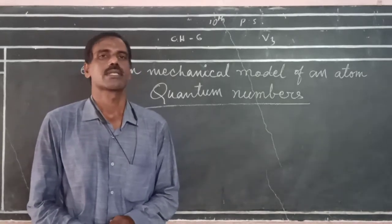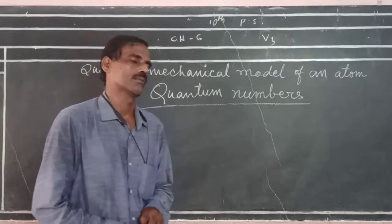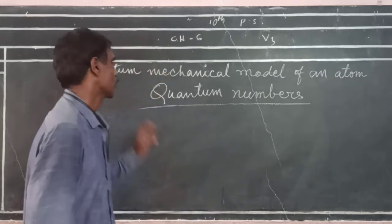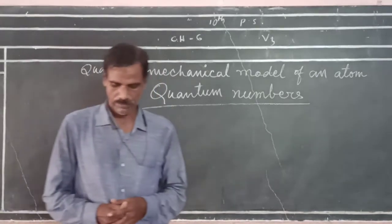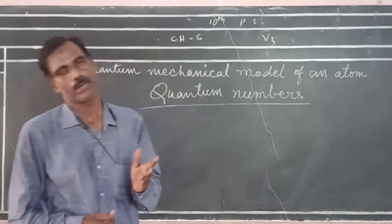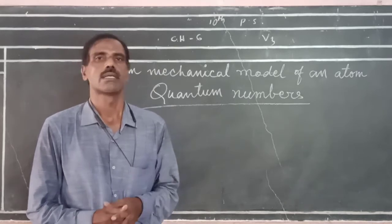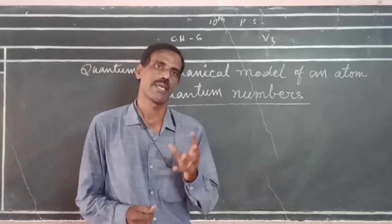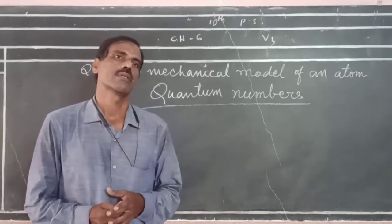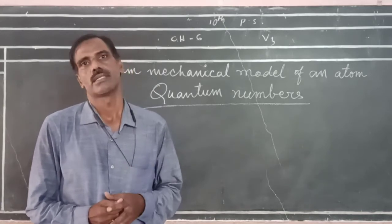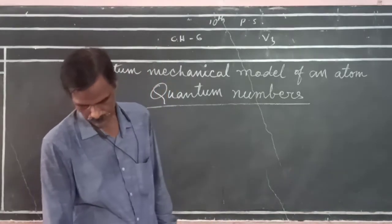Till now, we discussed different models of an atom. Now, we are going to discuss the quantum mechanical model of an atom. According to this model, instead of orbits proposed by Bohr, we discuss the space where the probability of finding an electron is more.